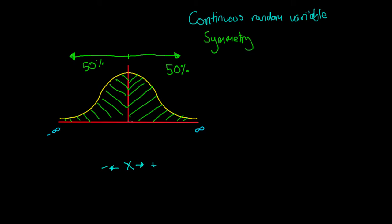So if we think about this logically, we have this middle point here which is exactly between negative infinity and positive infinity, which is zero. So half of our numbers — if we can take on any number between negative infinity and positive infinity — then half of them will be between zero and infinity, giving us 50% on this side, and the other half will be between zero and negative infinity, giving us 50% on the other side.